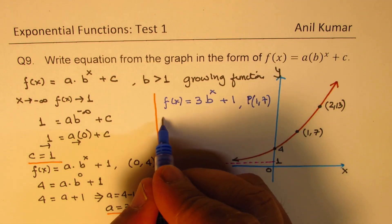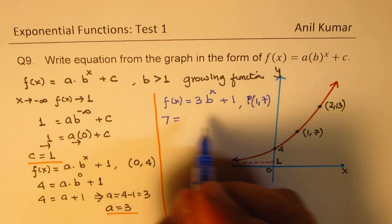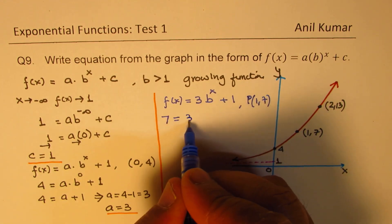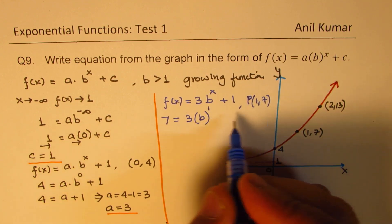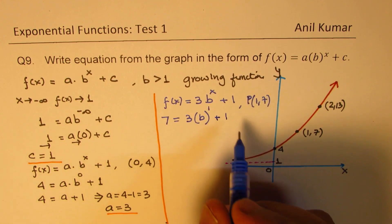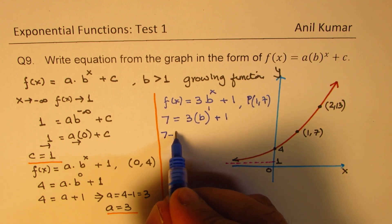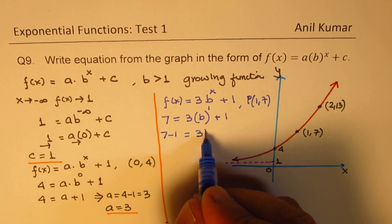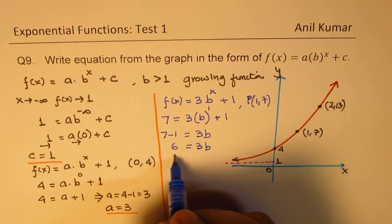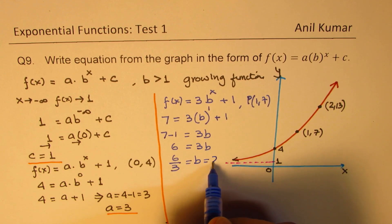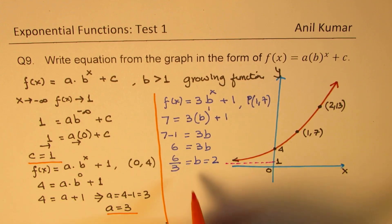In that case, 7 is the f(x). And we'll substitute 1 for x because 3 times b, anything to the power of 1 is the number itself. So we can rearrange. We get 7 minus 1 equals to 3b. So 6 equals to 3b, dividing by 3, we get the value of b, which is 2. So we get the value of b as 2.